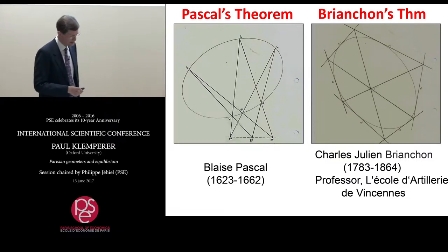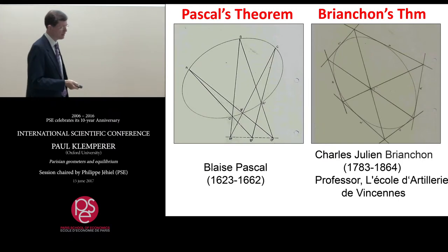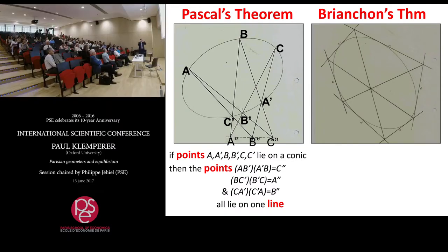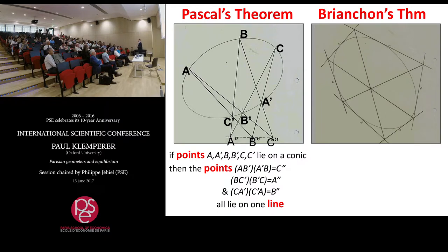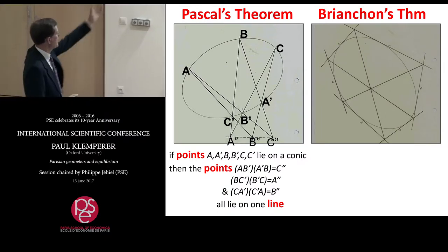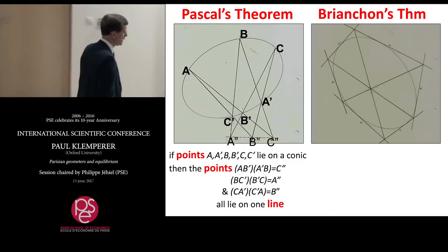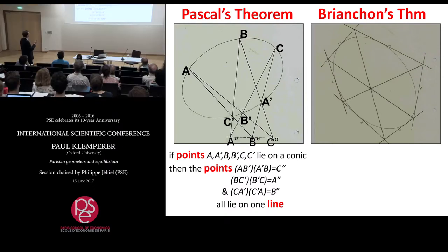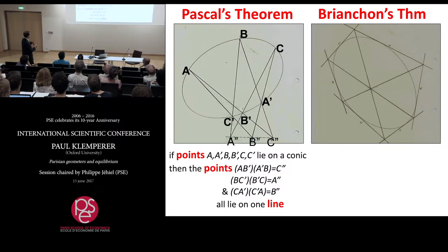What do these theorems say? Pascal's theorem tells us that if I take any conic and take any six points around that conic, labeling them A, B, C, A prime, B prime, C prime, and do the following construction: take line AB prime and line BA prime — they meet at point C double prime — and then taking the lines BC prime and B prime C, and C A prime and C prime A, I construct three points that are collinear.